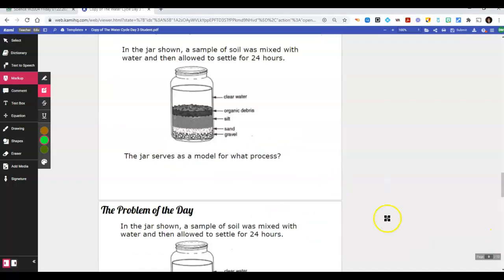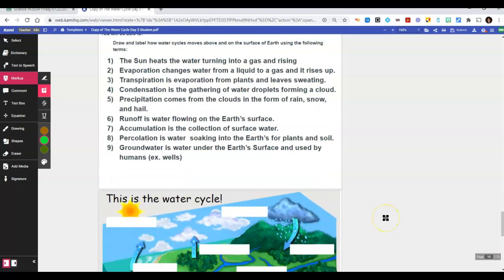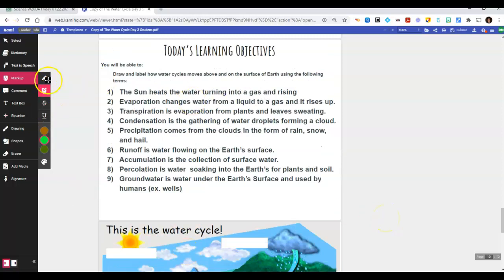My computer is slow, I'm sorry. Look at these words you're using. I'm going to highlight the words that you're going to use: the sun, evaporation, transpiration, condensation, precipitation, runoff, accumulation, and groundwater. The only one that is not going to have a label is percolation.